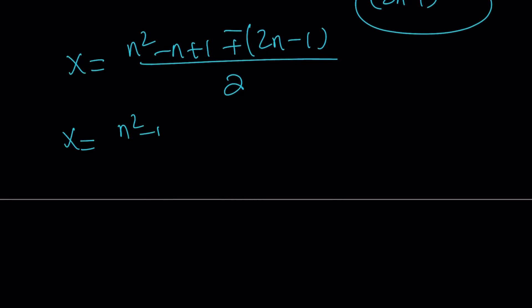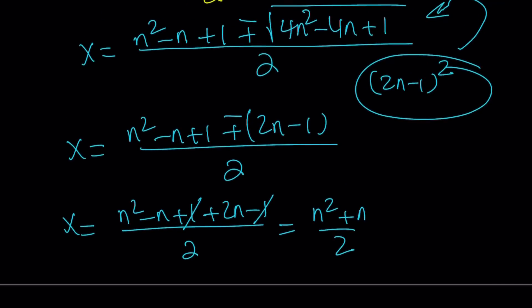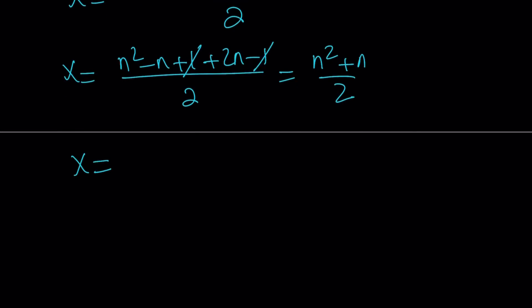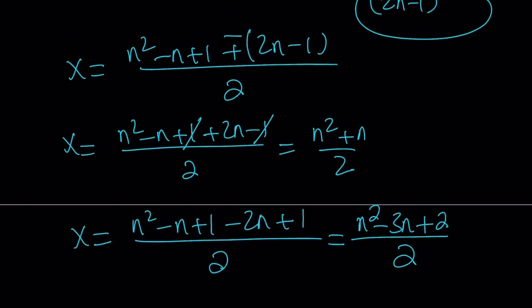Taking the plus sign first: we get (n squared minus n plus 1 plus 2n minus 1) over 2. The 1s cancel, and negative n plus 2n gives us x equals (n squared plus n) divided by 2. For the minus sign, we get x equals (n squared minus 3n plus 2) divided by 2. Note that n squared minus 3n plus 2 factors as (n minus 1)(n minus 2), and n squared plus n factors as n(n plus 1) — those are consecutive integers, which is meaningful.